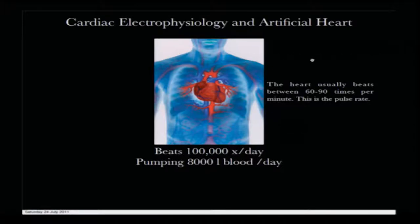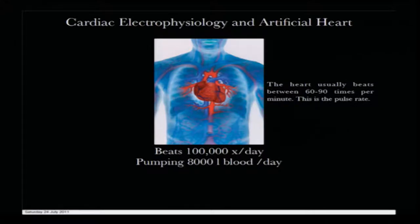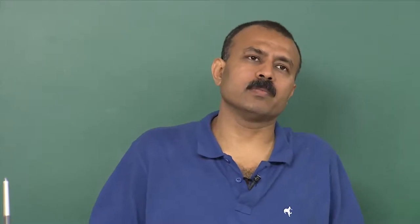Looking at cardiac electrophysiology and artificial hearts: a heart usually beats between sixty to ninety times per minute, which is essentially the pulse rate. Back-calculating, that means the heart beats around one hundred thousand times per day and pumps around eight thousand liters of blood a day. For a system to function this way for a whole life, the efficiency required is extraordinary. The electrical processes of the heart are different from the nervous system, as you will see in the action potential generated by the contractile muscle system that constitutes your heart.